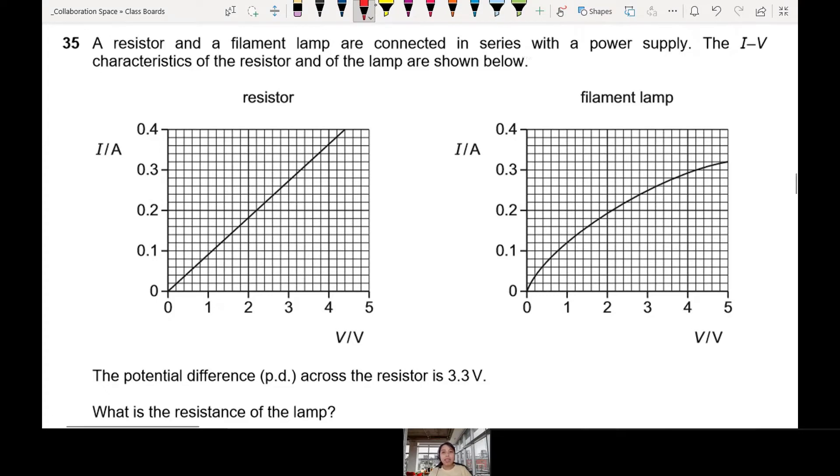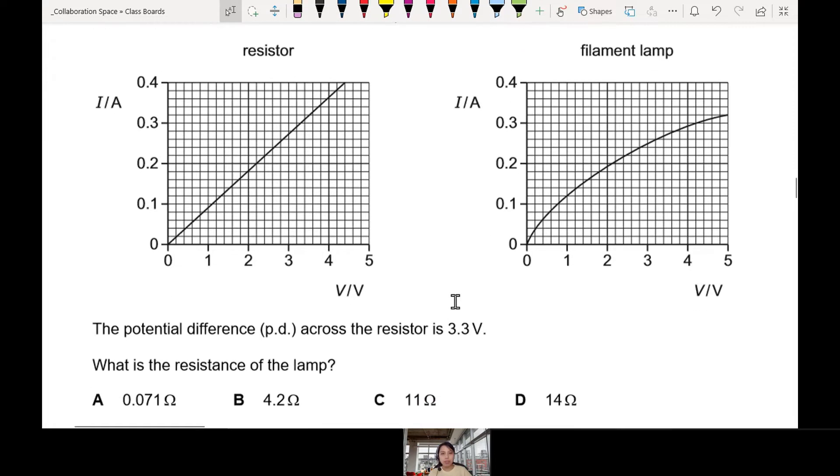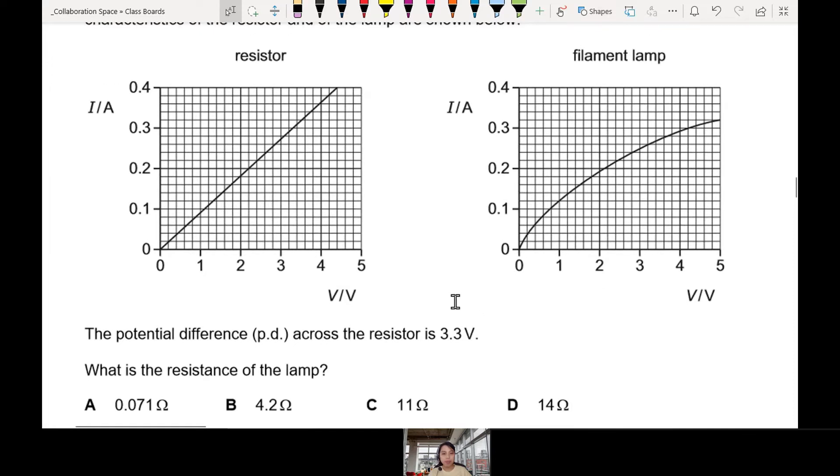So you have a resistor and filament lamp connected in series with a power supply. They never give us a circuit picture. So they give us the two IV graphs for resistor and filament. Potential difference across resistor is 3.3V. What is the resistance of the lamp?